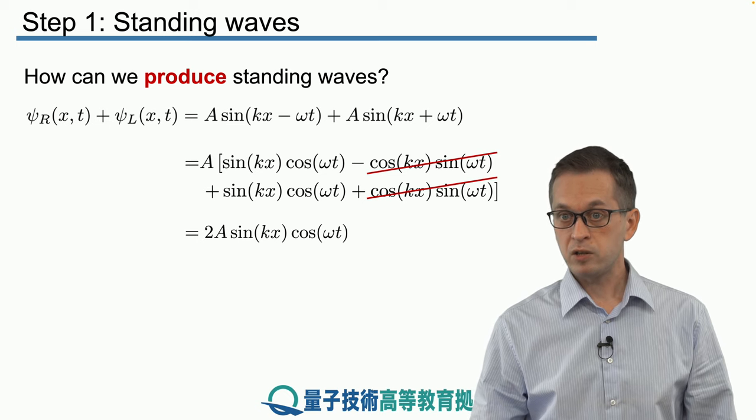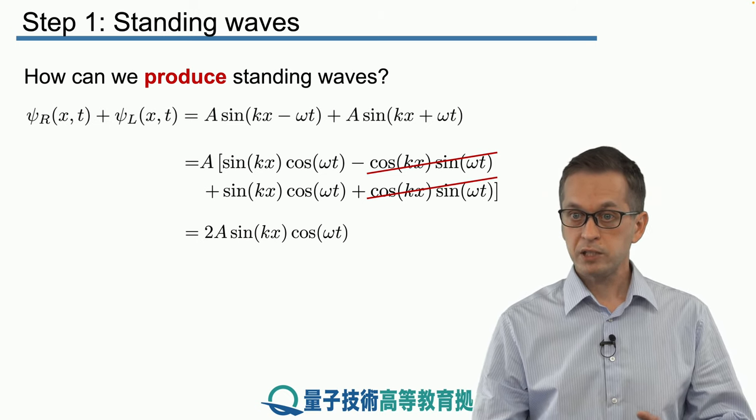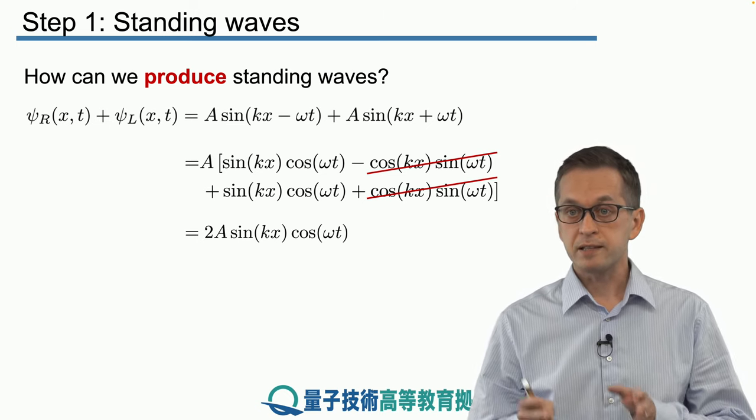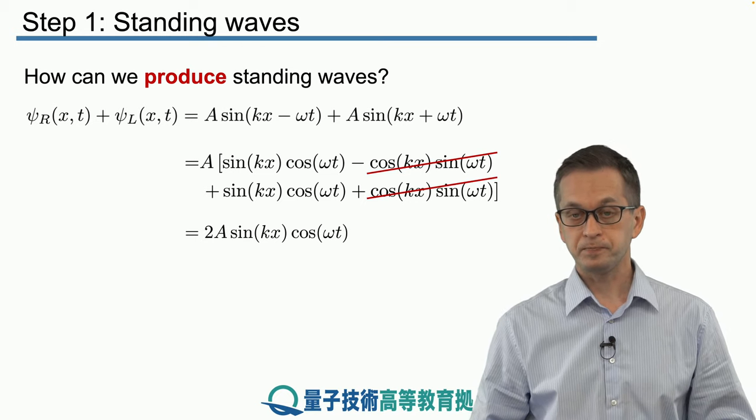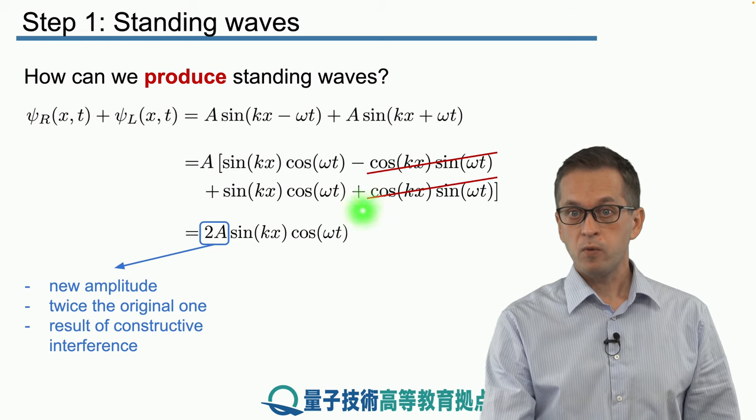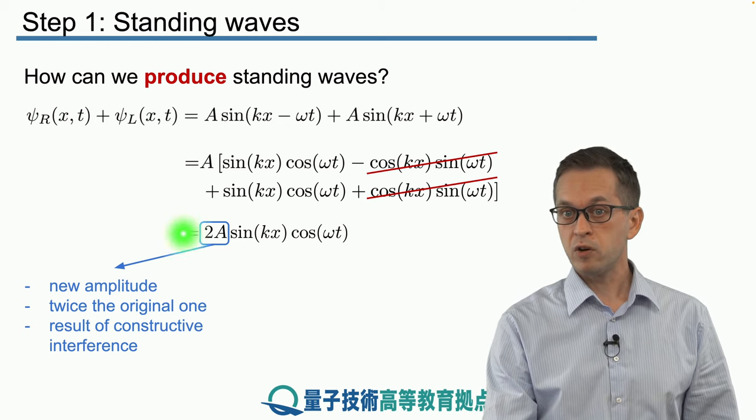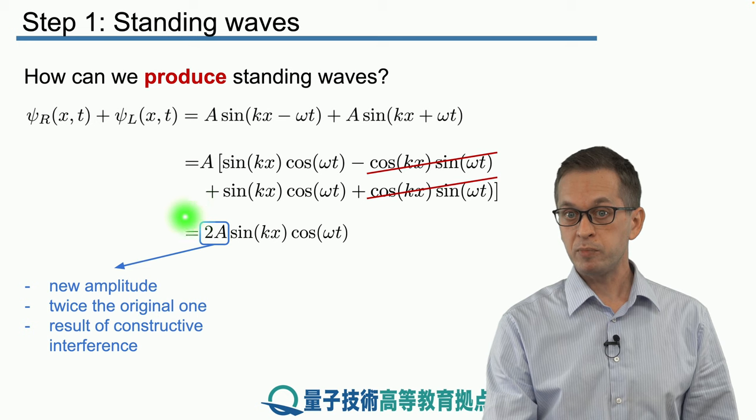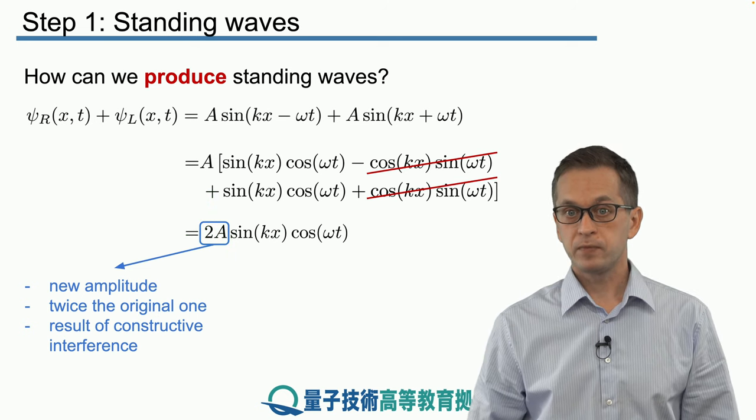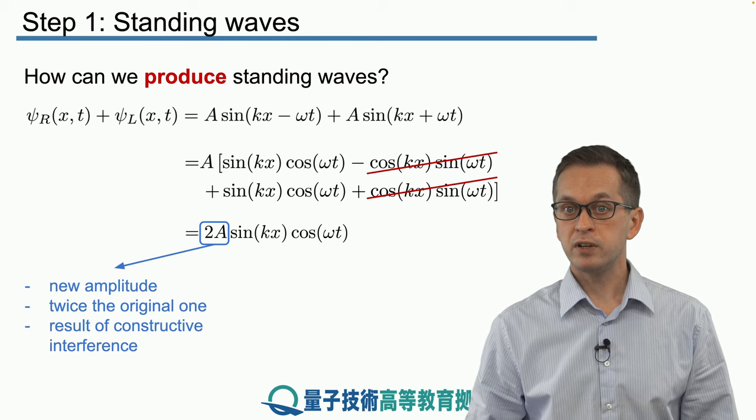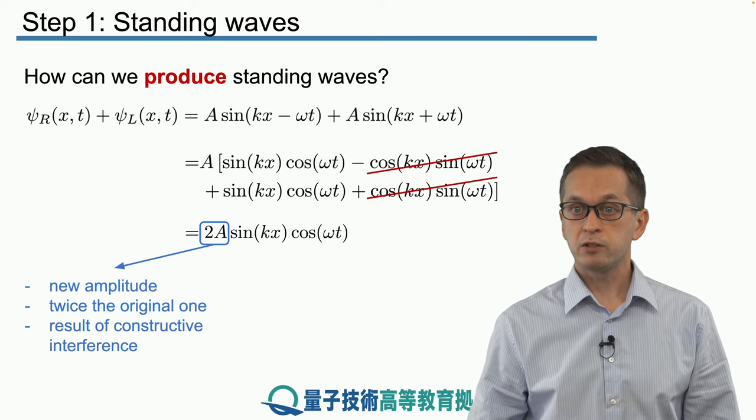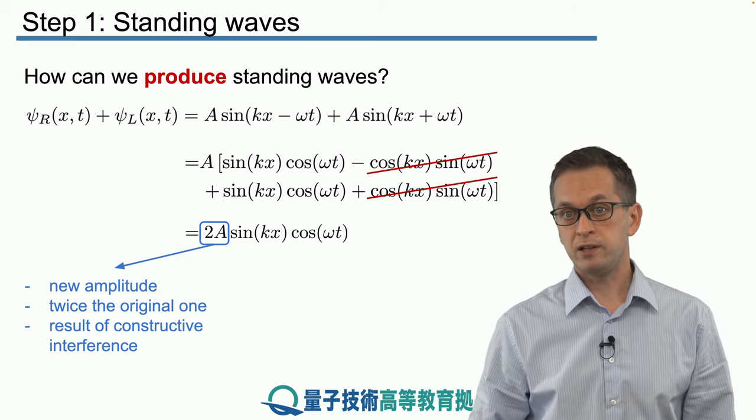Let's spend a little bit of time looking at this expression. You can see that this is not a travelling wave anymore. The spatial component of the wave kx is separate from the time component of the wave given by omega t. On top of that, the resulting wave does not have the amplitude of A, but 2A. So this is a new amplitude and this is a result of constructive interference between the two travelling waves, the right travelling wave and the left travelling wave.